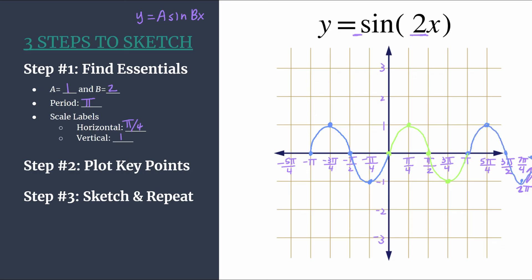So that will help us just see a really messy sketch that shows b is two, two cycles happen between zero and two pi. So it's just another connection to make, and a way to double check that you have a graph that is correct. So this was our three steps to sketch method to graph y equals sine of two x.